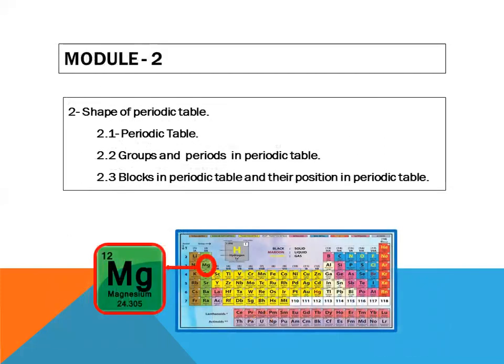Module number two. In this module, we will be studying about the shape of periodic table. In shape of periodic table, we are going to discuss what is the periodic table, how we can define it, and what is the periodic law.